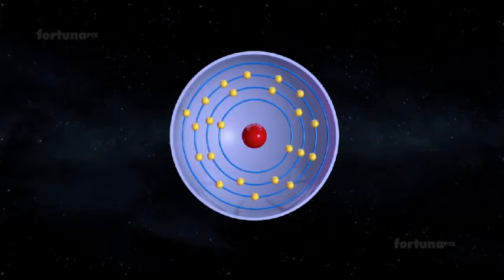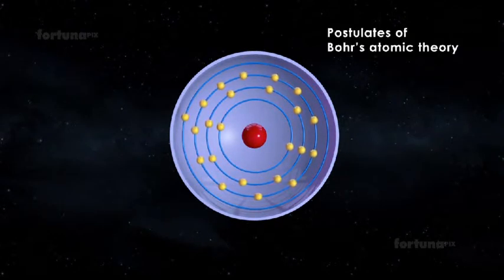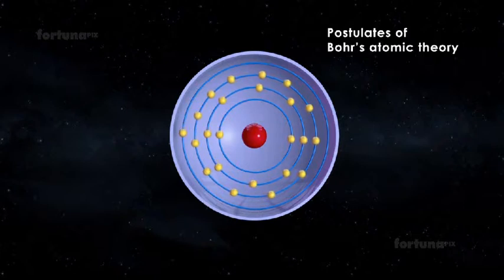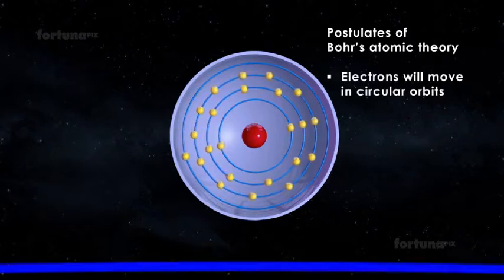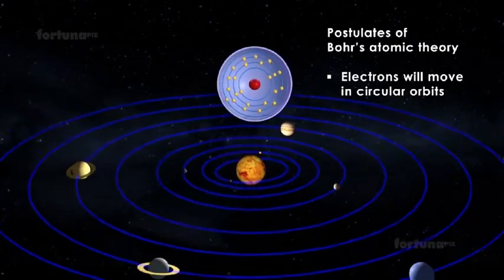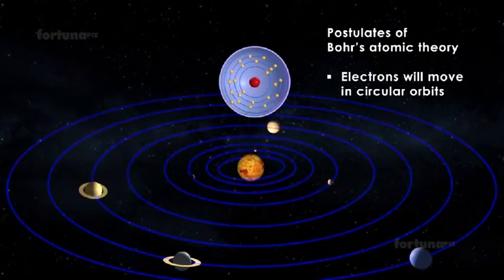Let's look more closely at the postulates of Bohr's Atomic Theory. According to the Bohr model, the electrons of an atom will move in circular orbits around the nucleus in much the way the planets orbit the sun.